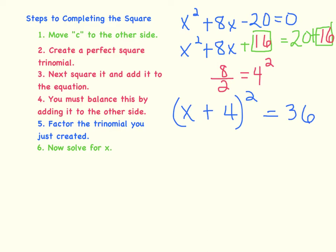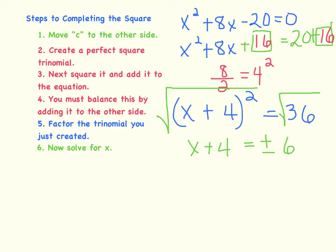So we are ready to solve this equation. Because x plus 4 is squared, we need to take the square root of that so that we can get down to just x plus 4. I'm going to take the square root of x plus 4 squared, but remember — if I do it to the left side, I also have to take the square root on the right side. The result is: on the left side I now have x plus 4, and on the right side the square root of 36 can be plus or minus 6, since positive 6 times positive 6 equals 36, and negative 6 times negative 6 equals 36.